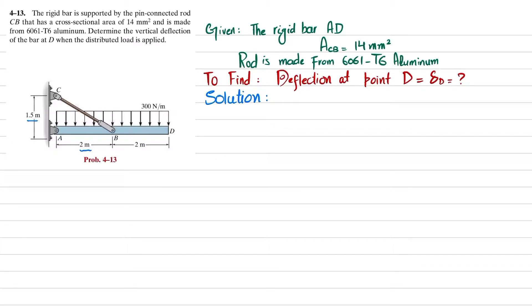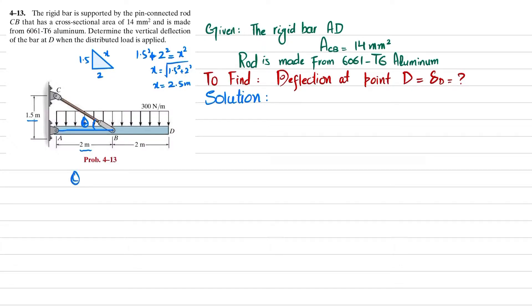The length is 2 meters and this length is 1.5 meters, forming a right-angle triangle. Using the Pythagorean theorem: 1.5 squared plus 2 squared equals x squared, so x equals 2.5 meters. The angle theta can be found using: theta equals tangent inverse of (1.5 plus 1.5) divided by 2, giving theta equal to 36.86 degrees.